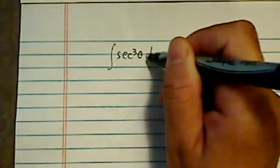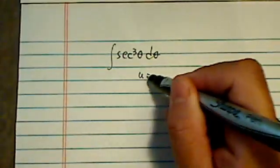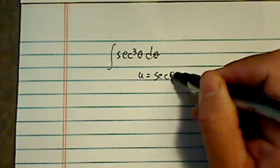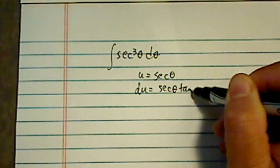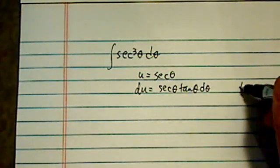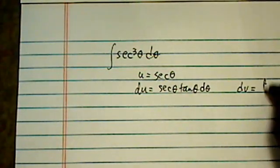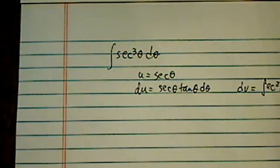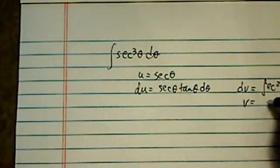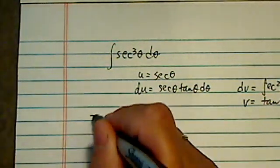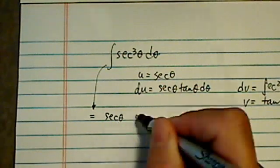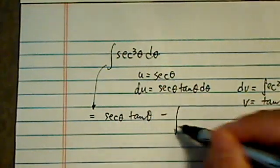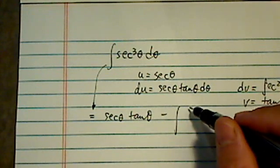Let's do the secant cubed theta d theta. First thing I'm going to do, I'm going to substitute by parts. u equal to secant, then du is equal to secant tangent, d theta. And then dv, of course, is secant squared theta d theta. And this v is easy, that's the tangent of theta. So then this one I have uv, which is secant theta tangent theta,